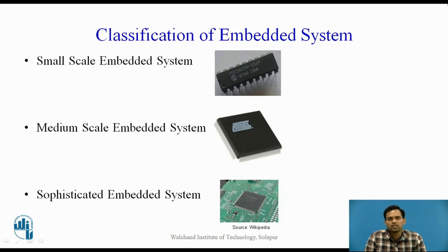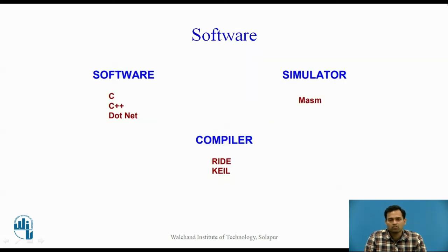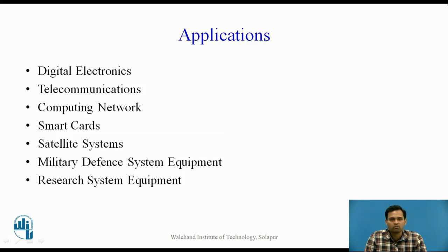Based on the application, we use small-scale, medium-scale, or sophisticated embedded systems. For software, embedded systems use languages like C, C++, and .NET; simulators such as MASM to simulate; and compilers like Keil. Programming is done in C, C++, or .NET, the program is simulated using MASM, and the compiler used is Keil.